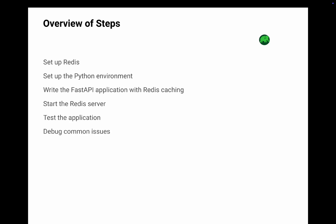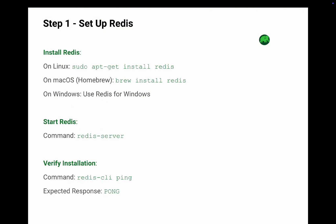Here's what we will cover in this video series. Number one: how to set up Redis. Number two: how to set up the Python environment. Number three: how to write a FastAPI application with Redis caching. Number four: how to start the Redis server. Number five: how to test the application and how to debug common issues.